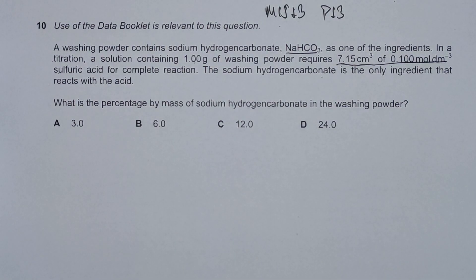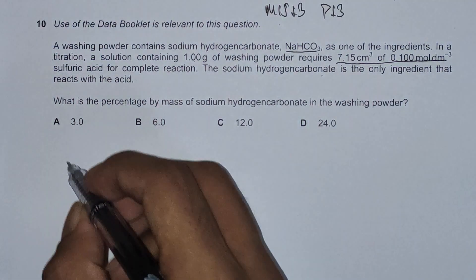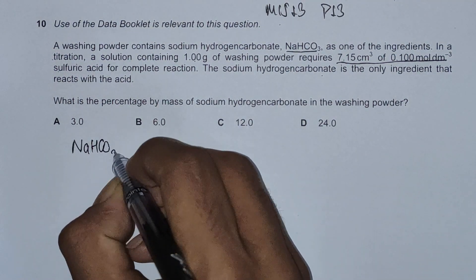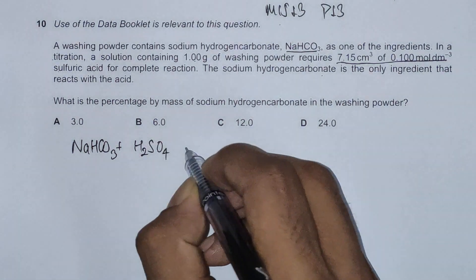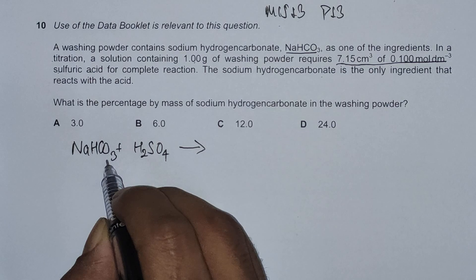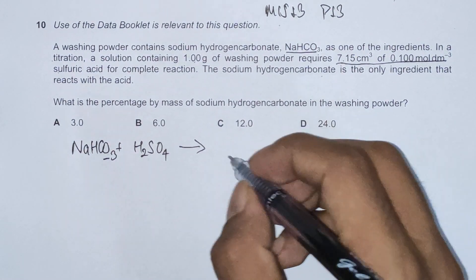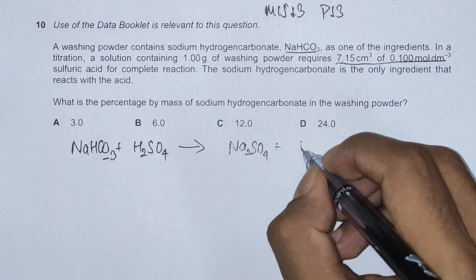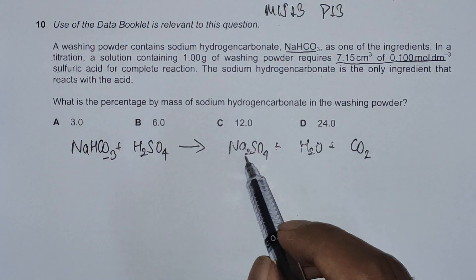First things first, we have to construct an equation of reaction between sodium hydrogen carbonate and sulfuric acid. The equation is NaHCO3 plus H2SO4, which should give us salt, water, and carbon dioxide because we have a carbonate as well. The salt should be sodium sulfate, which is Na2SO4, plus water and carbon dioxide.